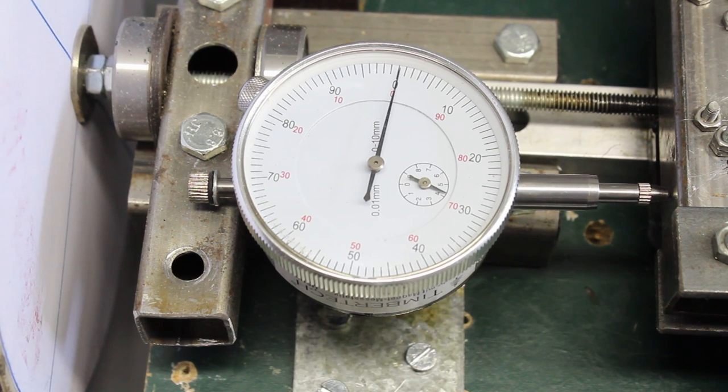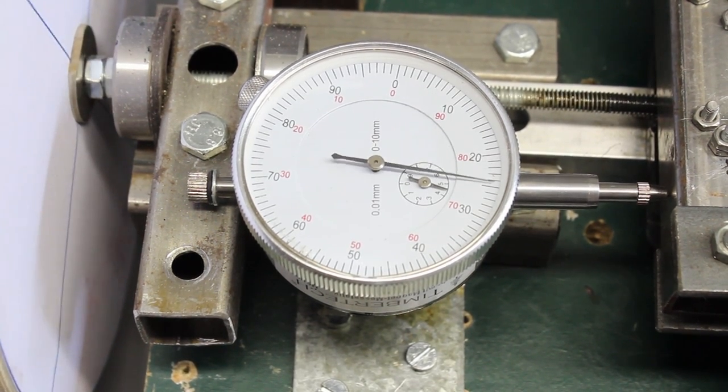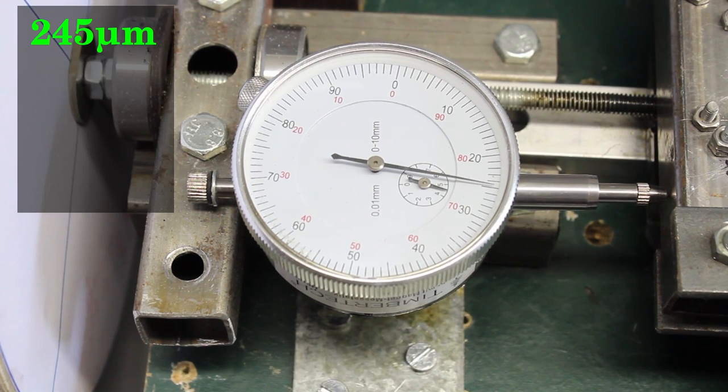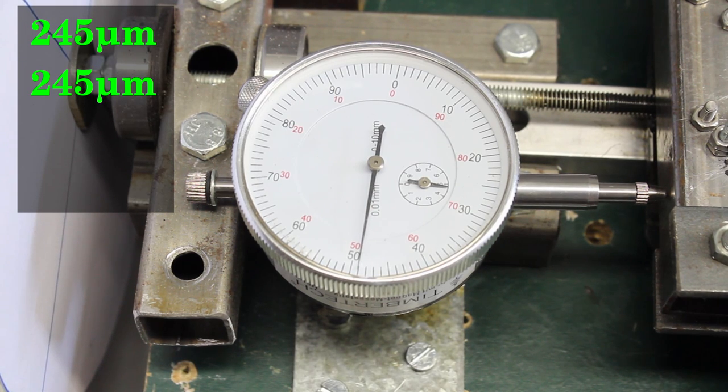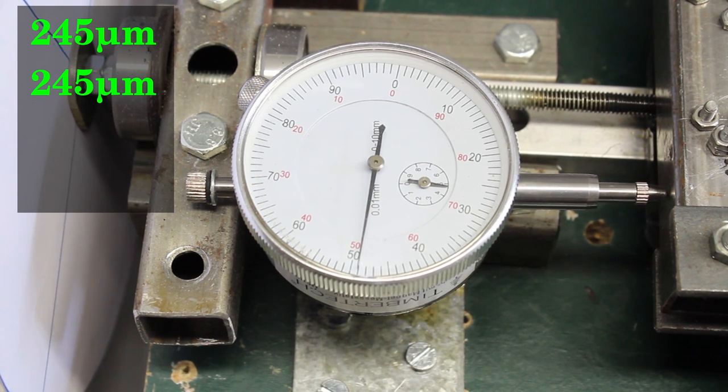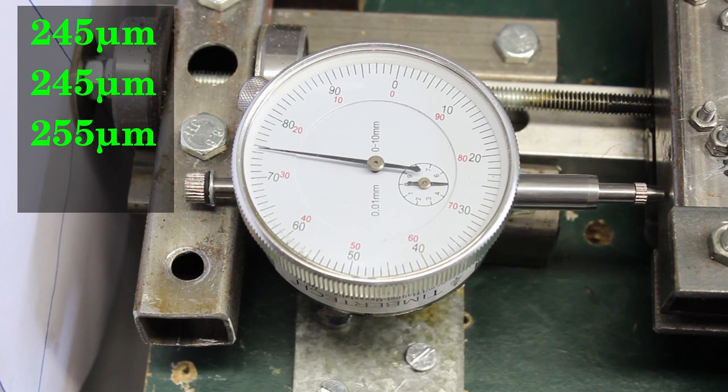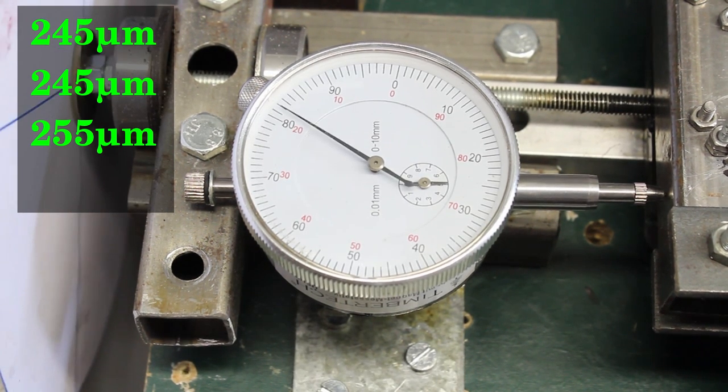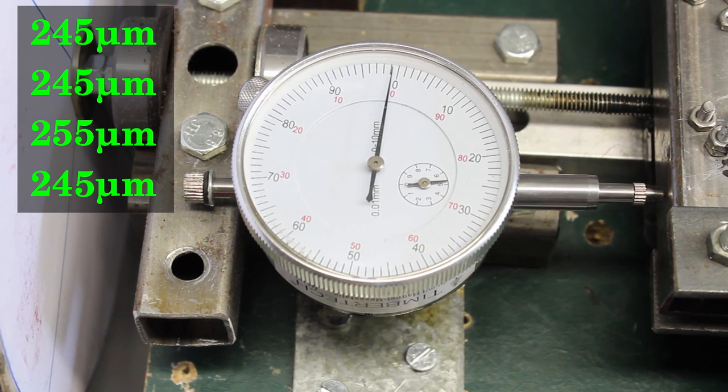In theory, a full turn of the threaded rod equals a linear movement of 1mm. When dividing the movement into 4 steps we get 245, 490, 745, and 990 micrometers. The measured errors are not larger than the observational error of the arrangement, thus there is no evidence for irregular movement.